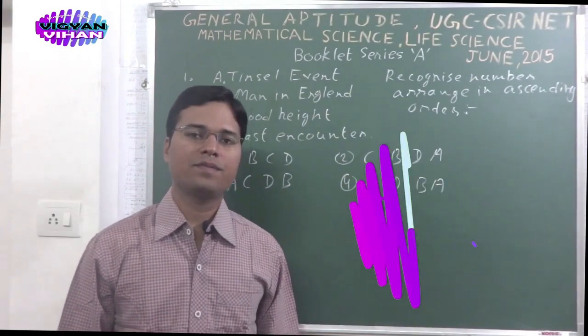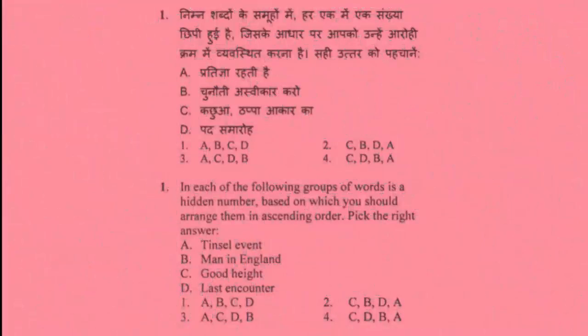This is our series for General Aptitude, Part A of UGC CSIR NET. In this episode, we will solve problems of Part A for Mathematical Sciences and Life Sciences. The questions are from Booklet Series A. The first problem: In each of the following group of words is a hidden number, based on which you should arrange them in ascending order. Pick the right answer. A. Tinsel event, B. Men in England, C. Good height, D. Last encounter.